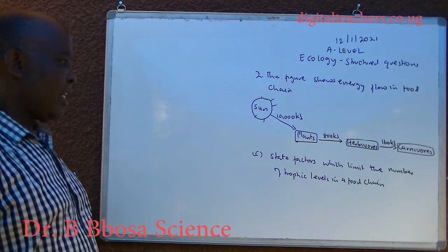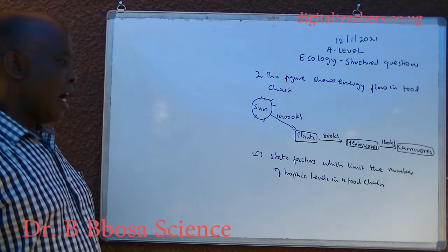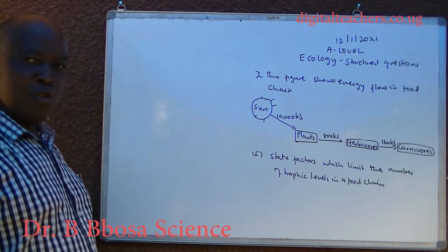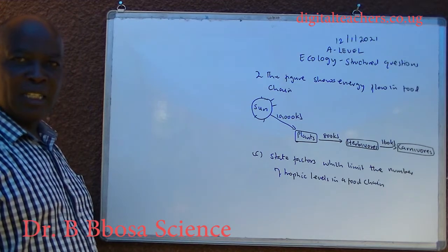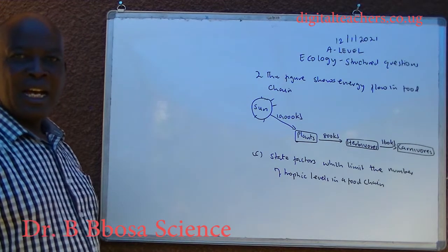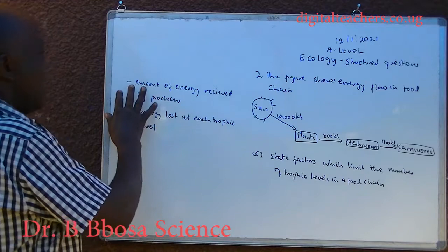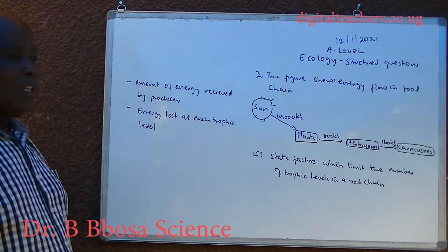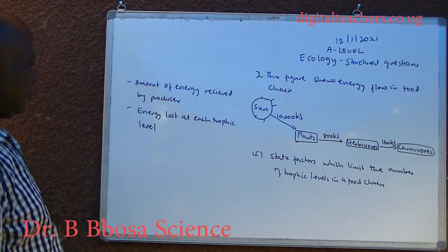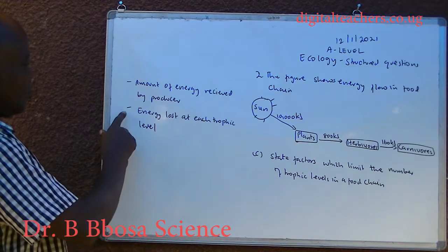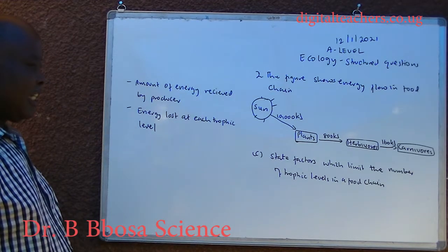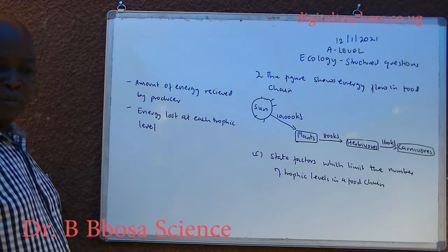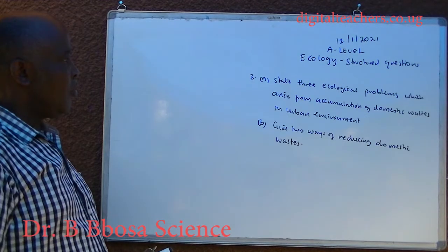C. State factors which limit the number of trophic levels in a food chain. You can pause and answer. One, amounts of energy received by producers. Two, energy lost at each trophic level.